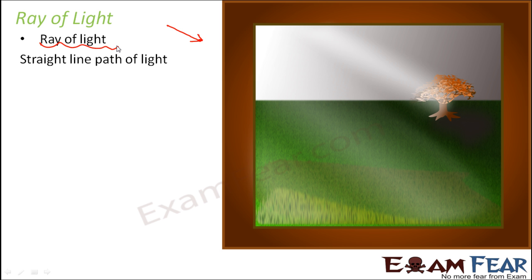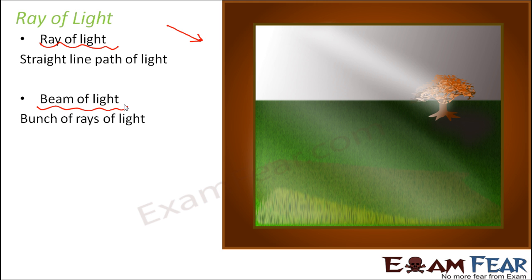We also use the term 'beam of light' in many cases. Do beam and ray mean the same thing? Not really. A beam of light means a bunch of rays of light. When you receive light from the sun, it is not just one ray — it is a large bunch of rays coming together, which is why you get so much light. Even the light coming out of an electric bulb is not just one single ray; whenever light comes out from a source it is always a bunch of rays, and that bunch is referred to as a beam of light.